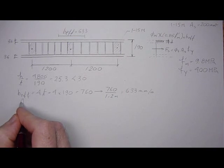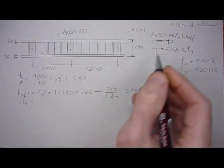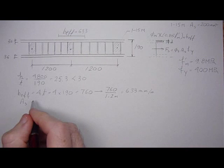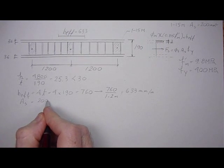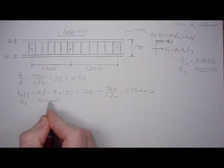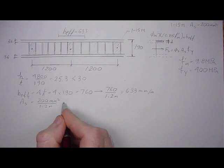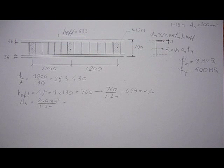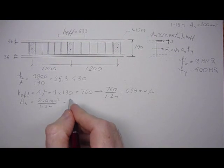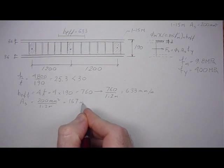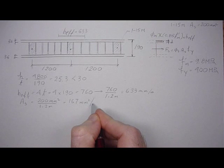And we could do the same thing with area of steel. The area of steel is 200 mm² per 1.2 meters. And then we could work effectively on a per meter basis. So 167 mm² per meter.